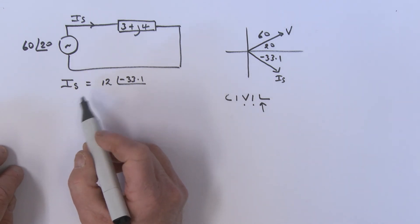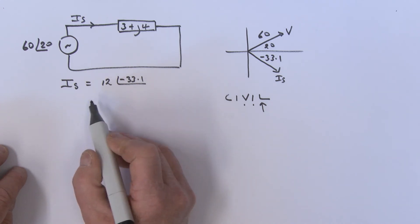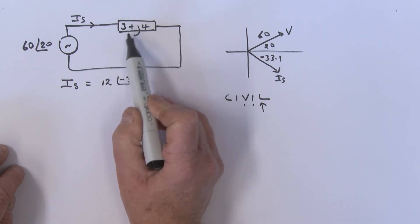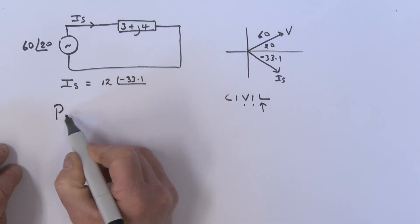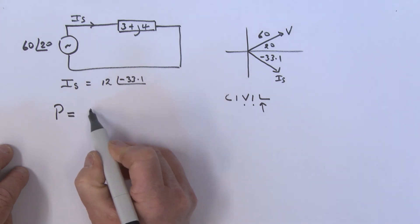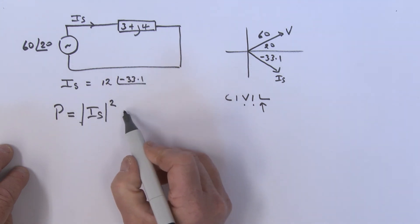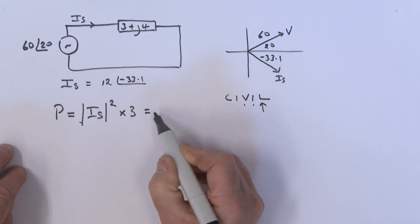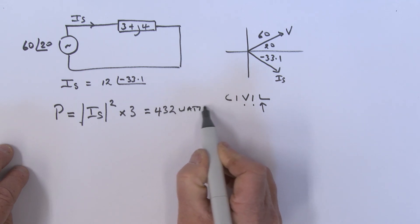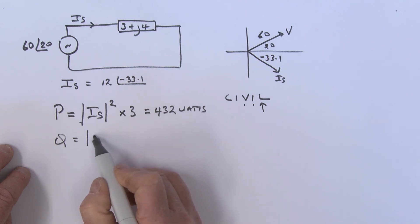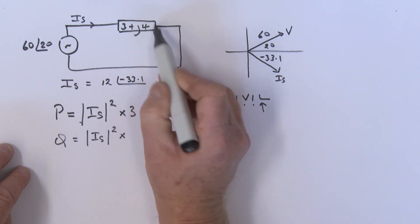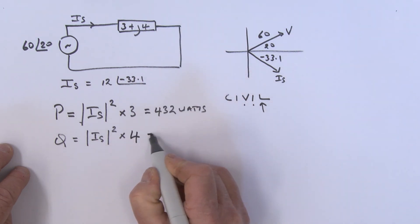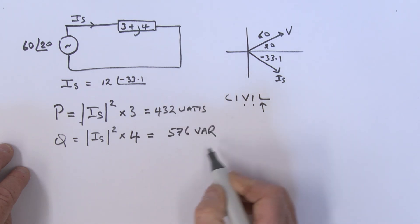We could also work out the real power and reactive power knowing the current and the real and reactive parts of the impedance. The true power P = |I_s|² × 3 = 432 watts, and the reactive power Q = |I_s|² × 4 = 576 volt-amps reactive. These match what we found before.